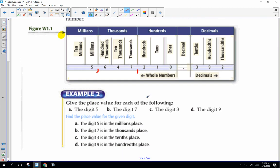So we're going to give the place value for each of the following. You guys are going to write this in your notes. The digit five is here and he is in the millions place. So you guys are going to write in millions place.